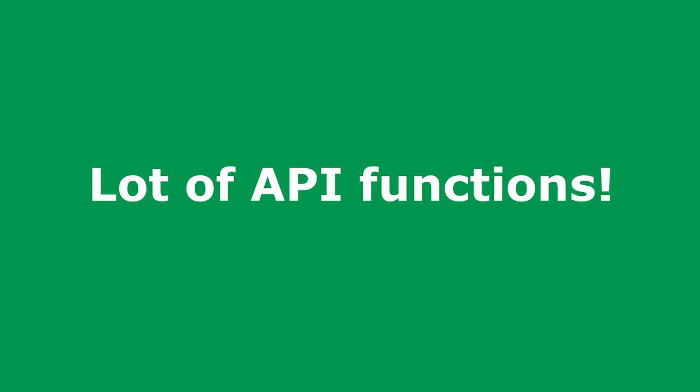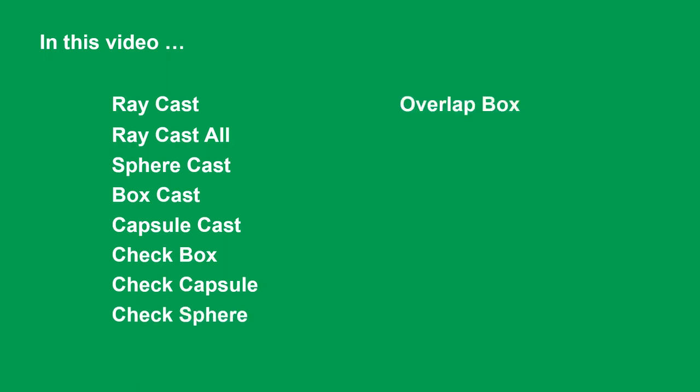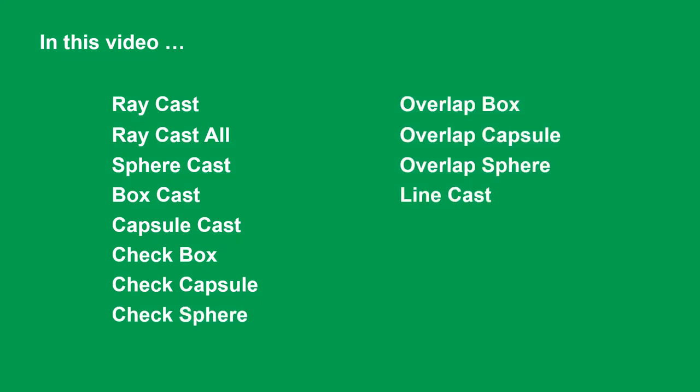Unity API has many functions related to the detection of colliders and getting information in a certain geometrical area. Here are some functions: Raycast, RaycastAll, SphereCast, BoxCast, CapsuleCast, CheckBox, CheckCapsule, CheckSphere, OverlapBox, OverlapCapsule, OverlapSphere, and LineCast.